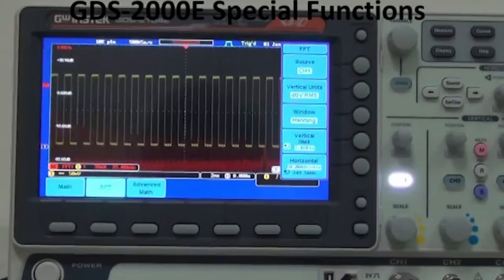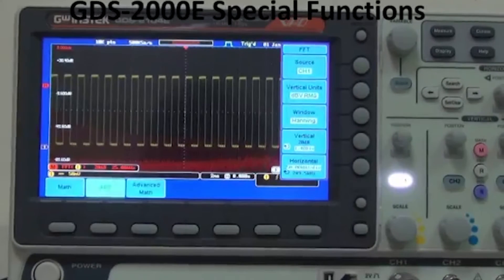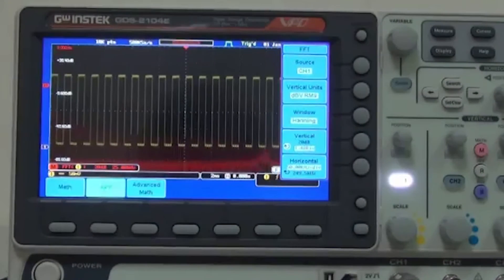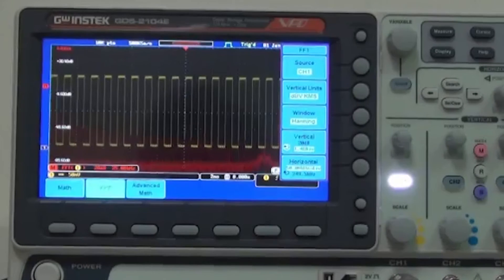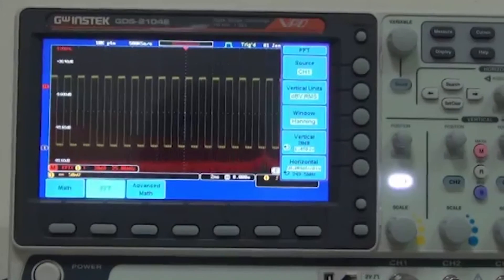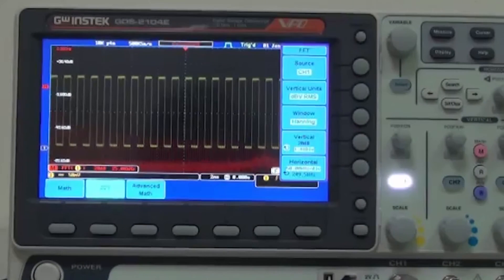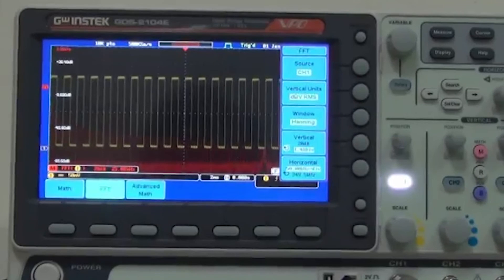A note will be shown on the screen. GDS-2000E has an edge in FFT display when compared with other oscilloscopes' FFT 1k points display.